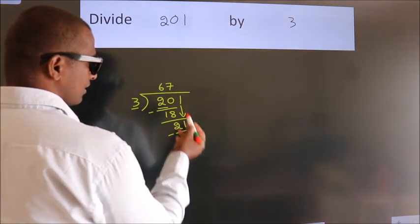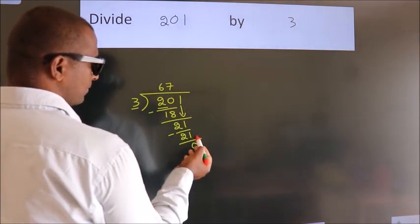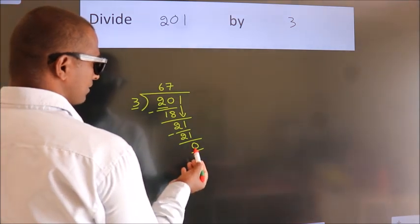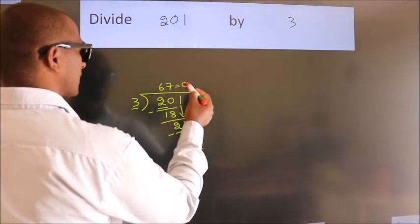After this, no more numbers to bring it down. And we got remainder 0. So this is our quotient.